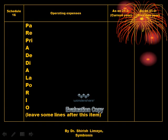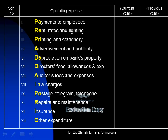This is how the mnemonics are written in Schedule 16 — Operating Expenses. The long forms are: PA for Payment to Employees, RE for Rent, Rates and Lighting, PRI for Printing and Stationery, A for Advertising and Publicity, DE for Depreciation on Bank's Property, D for Director's Fees and Allowances, other expenses, YA for Auditor's Fees and Expenses, LA for Law Charges, PO for Postage, Telegram and Telephone, RE for Repairs and Maintenance, I for Insurance, O for Other Expenditure.